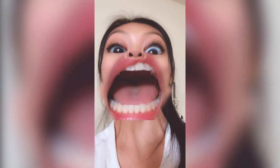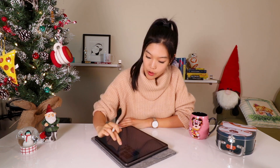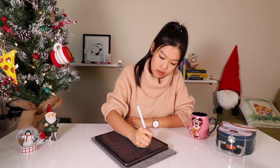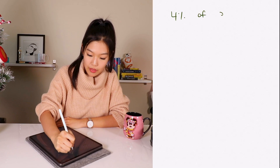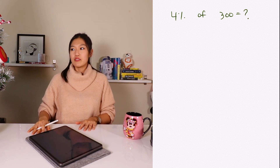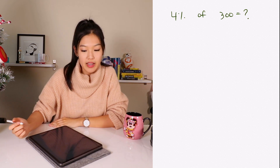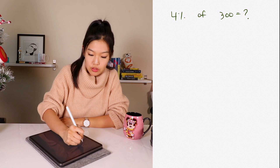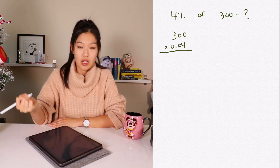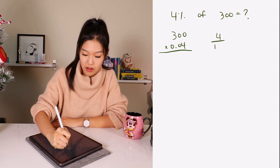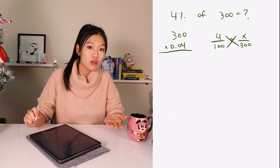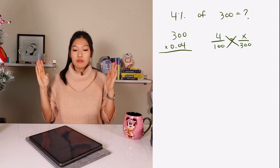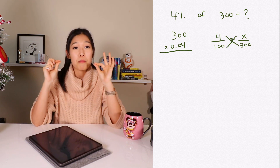So when I say percentages, a lot of kids freak out. Let's say you're given a question like this: what is 4% of 300? When I asked my students this, they would say something like, 'of' is multiplication, so I'll do 300 times 0.04. Or a lot of middle schoolers will do 4 over 100 equals x over 300, then cross multiply and cross cancel — it's so much work. Sometimes these methods are necessary, but I really want you to understand what the meaning behind this question is.